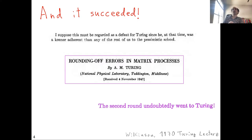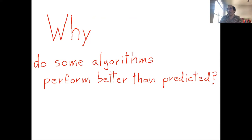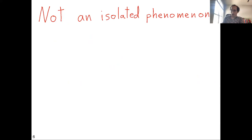So in this case, we had an algorithm with a pessimistic estimate. They tried it in practice and it worked, and then Turing came up with a way of explaining what happened by developing the notion of the condition number. The question we are trying to answer here is: why do some algorithms perform better than predicted?